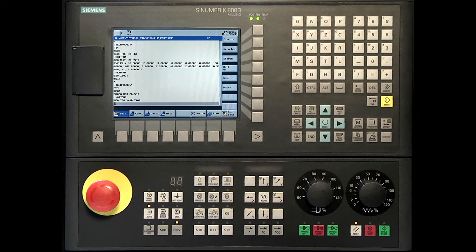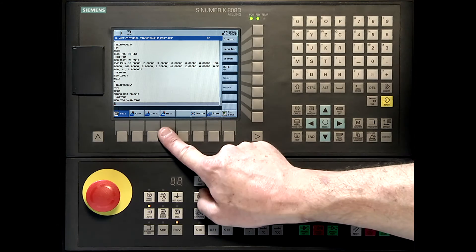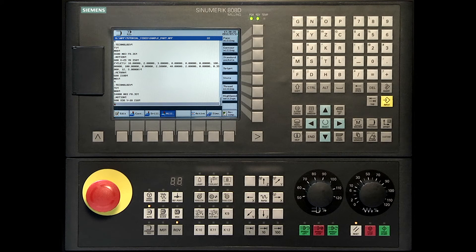The contour milling cycle 72 can be found by pressing the horizontal soft key milling, followed by the vertical soft key, contour milling.